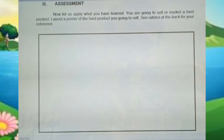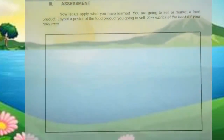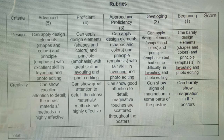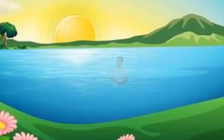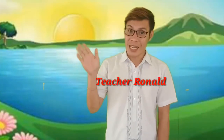Now you are going to apply what you have learned. You are going to sell or market a food product — lay out a poster of a food product you are going to sell, using the rubrics below as the basis for your score. And that's the end of our lesson in Art 6. I hope that you have learned a lot from this topic. This is Teacher Ronald, signing off. Bye-bye!